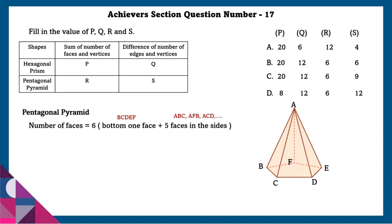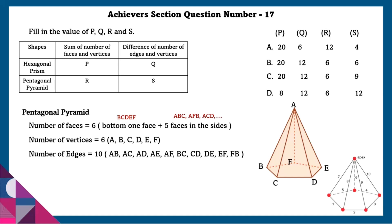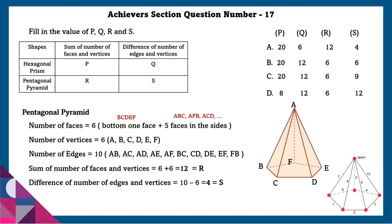In a pentagonal pyramid, number of faces equals 6 (bottom face plus 5 side faces). Number of vertices equals 6. Number of edges equals 10. Sum of faces and vertices equals 6 plus 6 equals 12, which equals R. Difference of edges and vertices equals 10 minus 6 equals 4, which equals S.